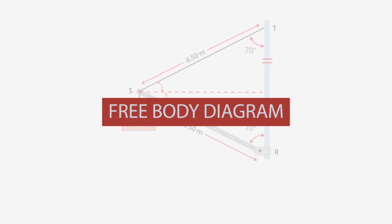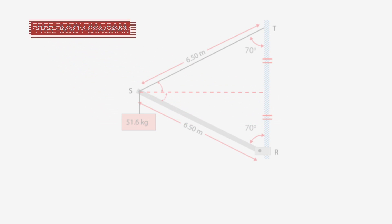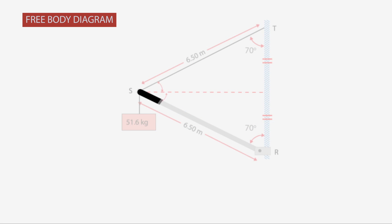Let's get started drawing the free body diagram. We'll start by drawing a representation of the beam. So there's that beam going down and right. And then we'll start adding forces to it.